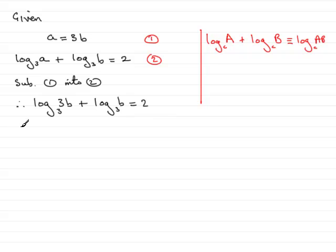So using that rule here, what I've got is that log₃(3b) plus log₃(b) is the same as log₃(3b times b), 3b² in other words, in base 3. And that equals 2. So you can see I've reduced this down to two terms, one term on one side of the equals and one term on the other.